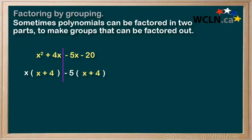Well, now we can see that x plus 4 is a common factor. So we'll factor that out and put it in front. And this will leave us an x minus 5. We have factored this term by grouping.